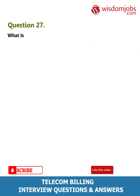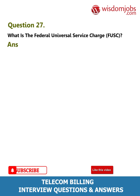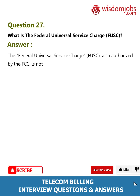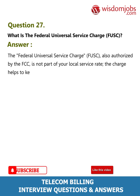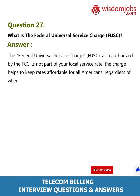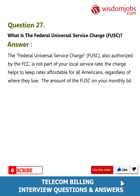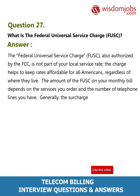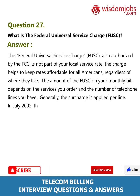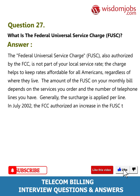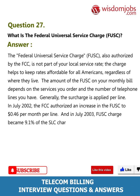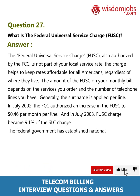Question 27: What is the Federal Universal Service Charge (FUSC)? Answer: The Federal Universal Service Charge (FUSC), also authorized by the FCC, is not part of your local service rate. The charge helps to keep rates affordable for all Americans regardless of where they live. The amount of the FUSC on your monthly bill depends on the services you order and the number of telephone lines you have. Generally, the surcharge is applied per line. In July 2002, the FCC authorized an increase in the FUSC to $0.46 per month per line, and in July 2003, the FUSC charge became 9.1 percent of the SLC charge.